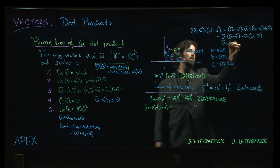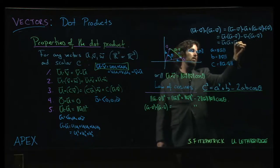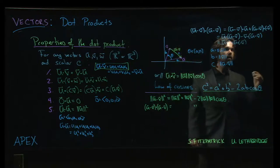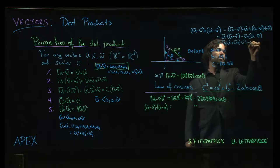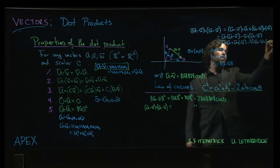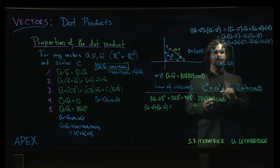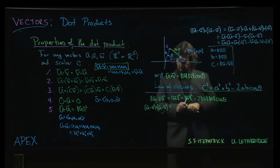And now I can use the second property again, u dotted with u, and then u dotted with minus v, and then minus v dotted with u, and then minus v dotted with minus v.